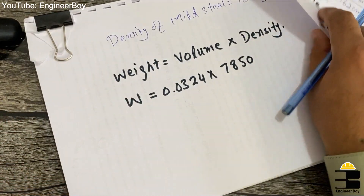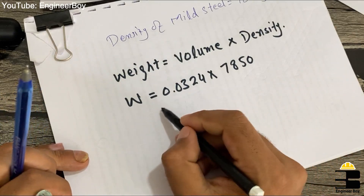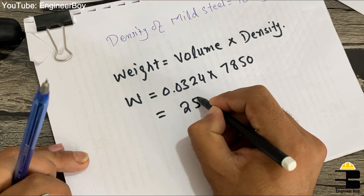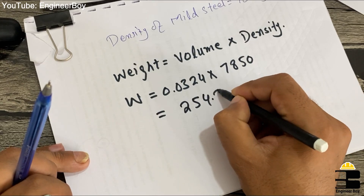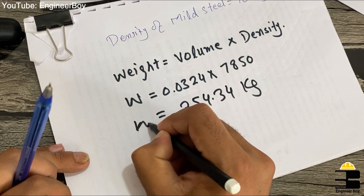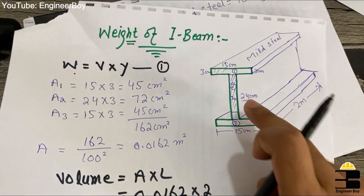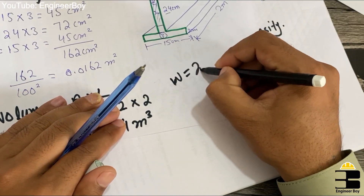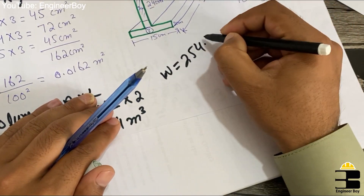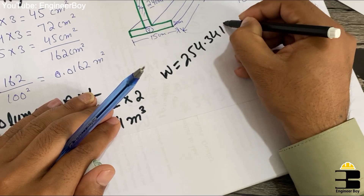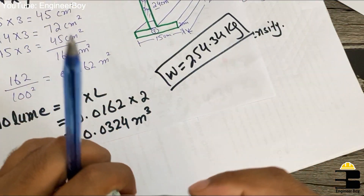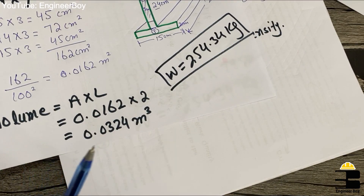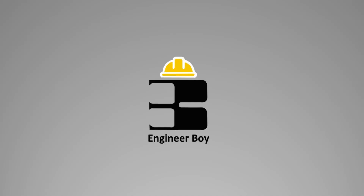Doing the multiplication, we get 254.34 kg. So the weight of this I-beam is 254.34 kg. That's all — see you in the next video!